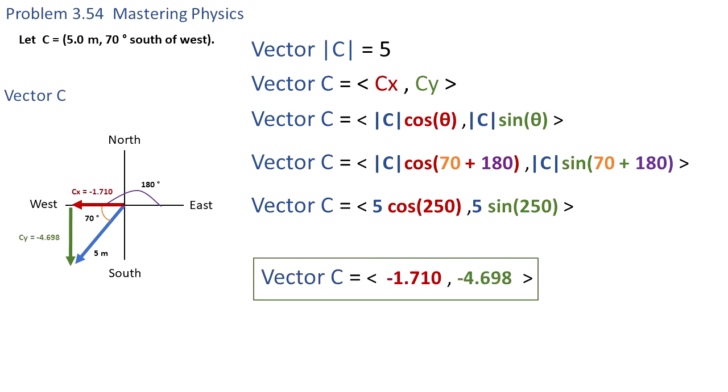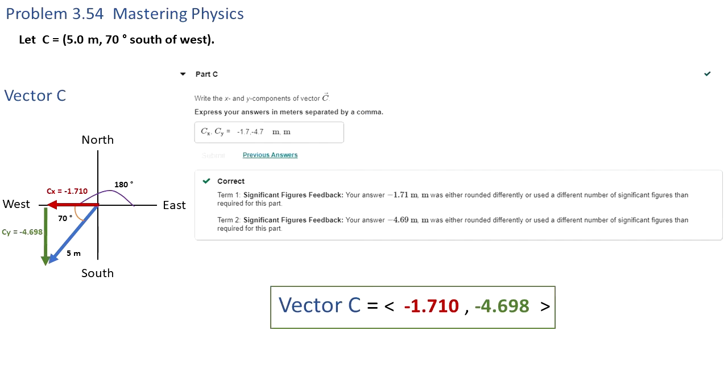That equals minus 1.710 in the x and minus 4.698 in the y. We are only required to show one decimal place, so round Cx to negative 1.7 and Cy to negative 4.7.